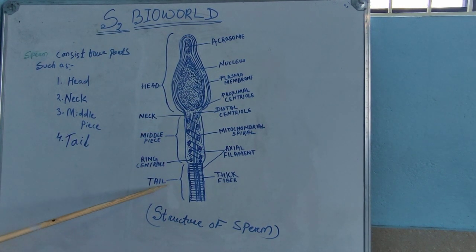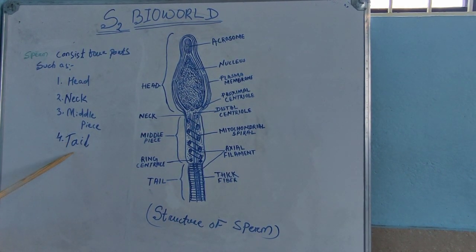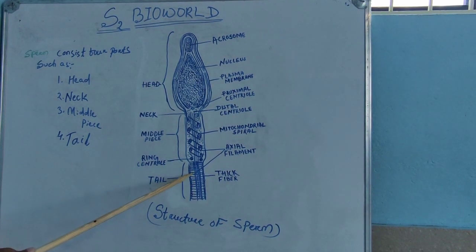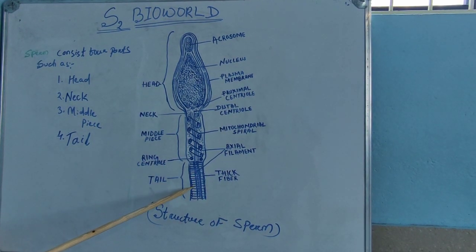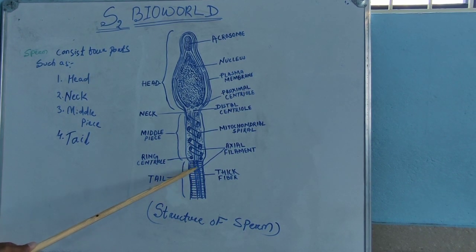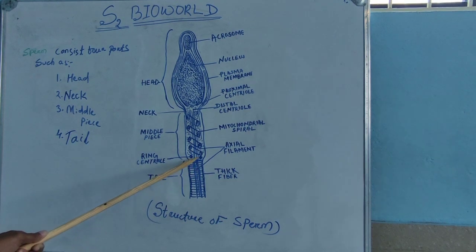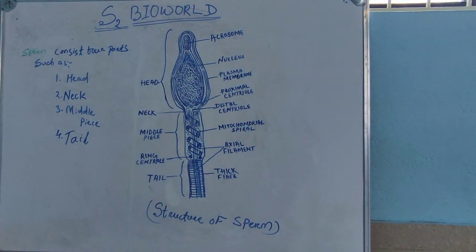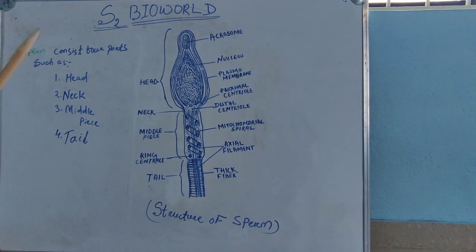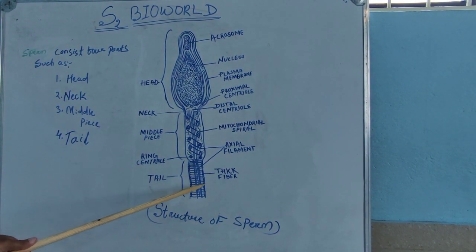The last part — the fourth part of the sperm — is the tail. The tail is the longest part of the sperm, which consists of an axial filament. The axial filament is formed by the distal centriole, and it provides the skeletal structure of the tail.